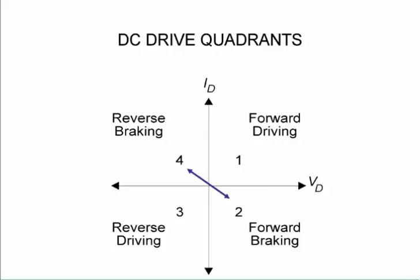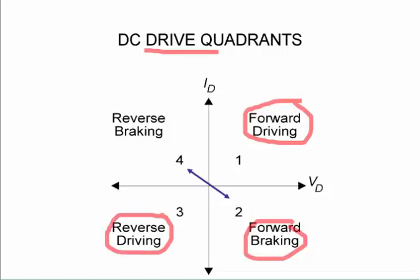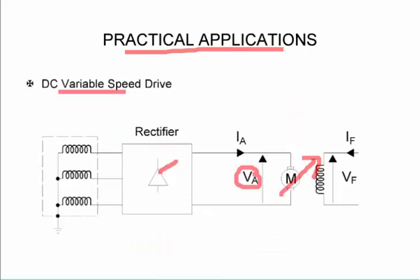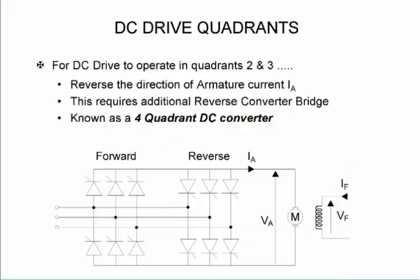Now my DC drive can operate in different quadrants. It can be forward driving, or it can be forward braking, or it can be reverse driving in the opposite direction and reverse braking. But with what we have over here it's not possible to operate in all the quadrants. If I want to operate in all four quadrants I need a four quadrant DC converter.